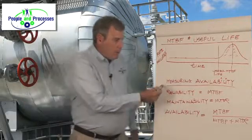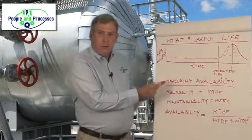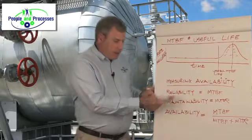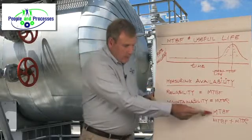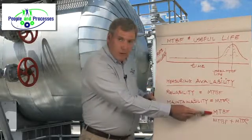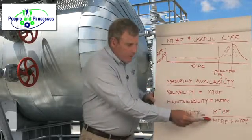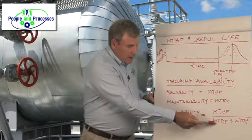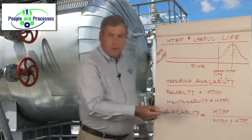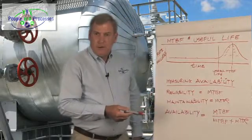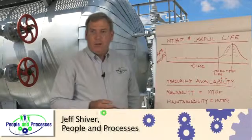We use both of those to actually measure availability. Here's the calculation: our measure of reliability, MTBF, is divided by MTBF plus mean time to repair — and that's actually how we measure availability.